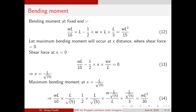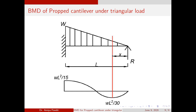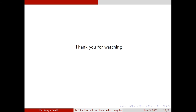So at a distance x = L/√5, the bending moment is WL²/30, and at the fixed end it is WL²/15. I hope you found this video helpful.